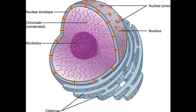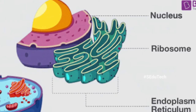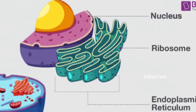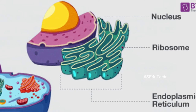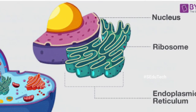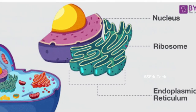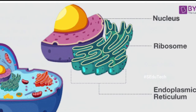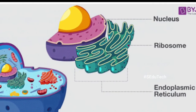Our sixth part is ribosomes. These are little round structures that produce proteins. They are found in the cytoplasm or attached to the endoplasmic reticulum.